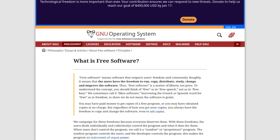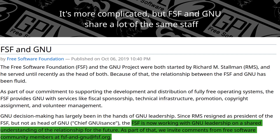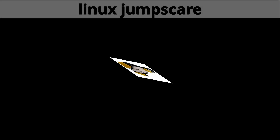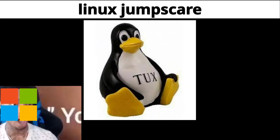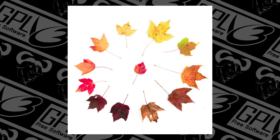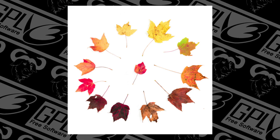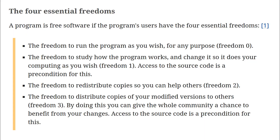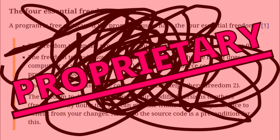The people running the GNU project also run the Free Software Foundation, and are also the developers of the GNU utilities. Note that you can generally get some variation, but you can tell how hard software is trying to screw you over by how many of the core freedoms it violates. If none of the freedoms are upheld, then that software is considered proprietary.